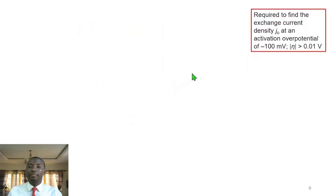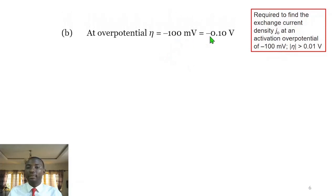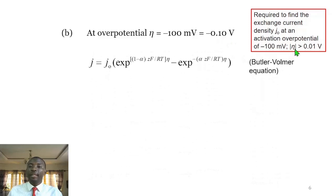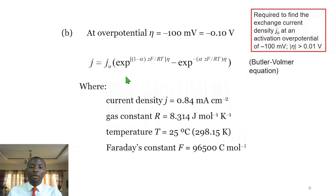The next part of the question asks us to find the exchange current density J0 at an activation overpotential of negative 100 millivolts. Converting to volts, this is 0.10 volts, and the absolute value is greater than 0.01. Therefore, the complete form of the Butler-Volmer equation applies.